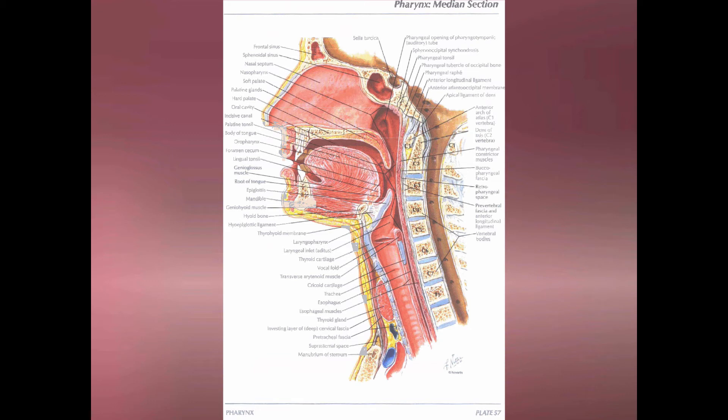This is an overwhelming slide — I don't want you to memorize everything. What I want you to see is that the oral cavity predominantly exists as an occupied space, and it's occupied by the tongue. One of the things you're going to have to contend with when managing a patient's airway is the tongue. It's going to be in the way. Sometimes it's going to be inflamed or edematous. We'll talk about different techniques to get around that.